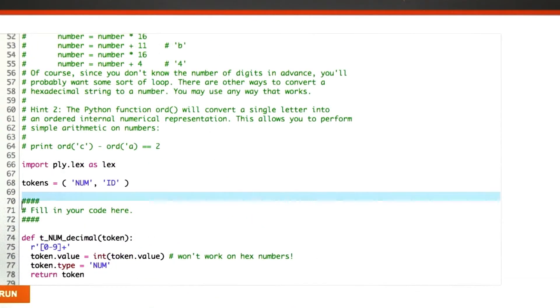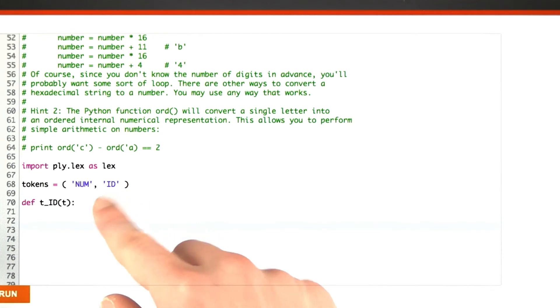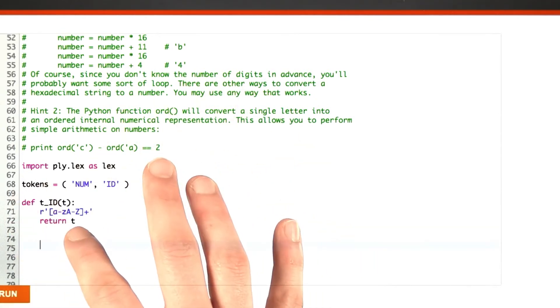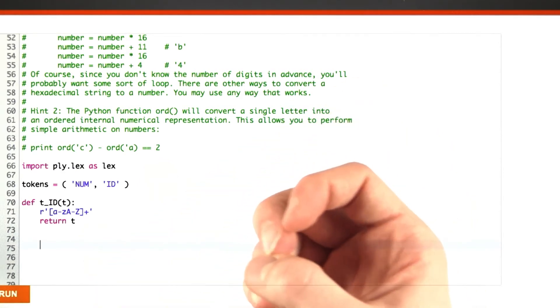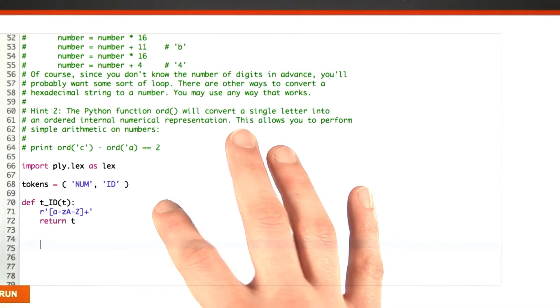Let's fill in our code. Because it's easier, let's do the ID first. We have to come up with a regular expression. The definition for the ID is pretty simple. It's just a regular expression that matches sequences of characters with the letters A through Z, regardless of their capitalization, and then we just return it.